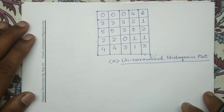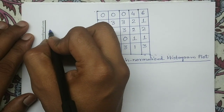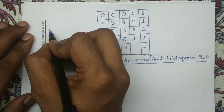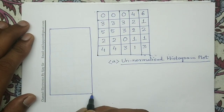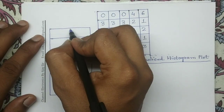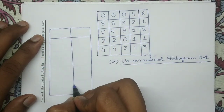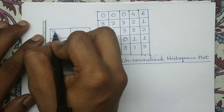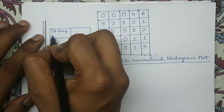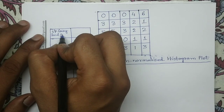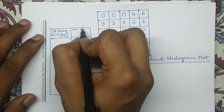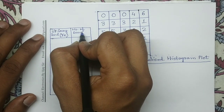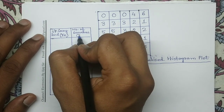First we will solve for the unnormalized histogram plot. For simplicity, let me draw a table here. On this side we will write the input gray level, represented by RK, and on this side we will write its number of occurrence, represented by nK.